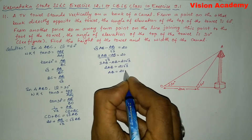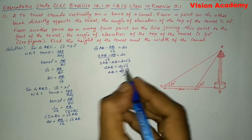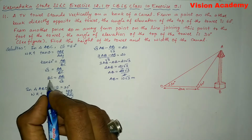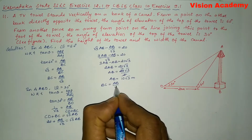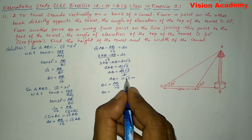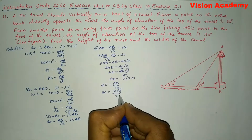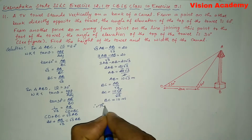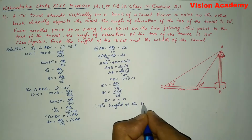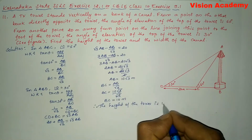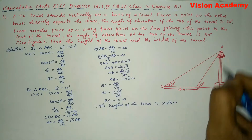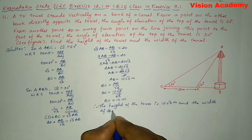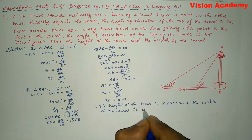Solving for AB: AB = 10√3 meters. Now BC = AB/√3 = 10√3/√3 = 10 meters. Therefore, the height of the tower AB is 10√3 meters and the width of the canal BC is 10 meters.